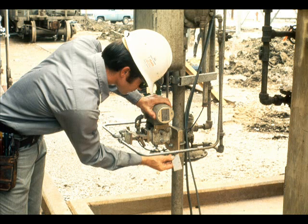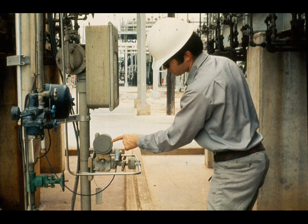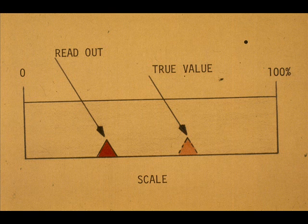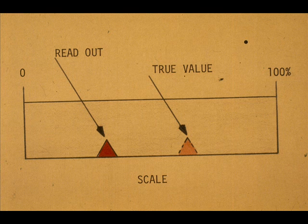After locating the transmitter, we will determine whether the trouble is internal to the transmitter or external. In order to have a symptom, we will assume our transmitter is suspected of reading about half the true value.